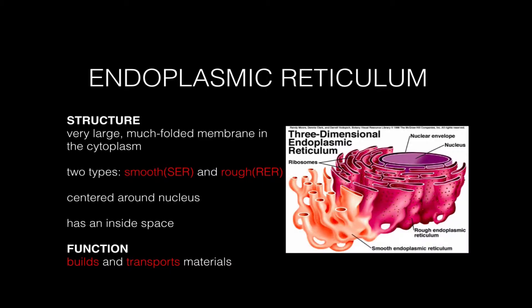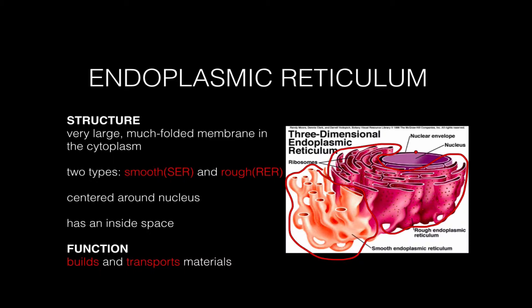Here's a diagram of what an endoplasmic reticulum looks like. This part right here is the smooth kind because there are no ribosomes attached, whereas this part here is the rough kind, and you'll see the nucleus here — it's kind of all surrounding the nucleus. The rough ER and the smooth ER kind of transition into each other. If a cell needs more rough ER, it just attaches ribosomes to the smooth ER, and if it needs more smooth ER, it just takes the ribosomes off.